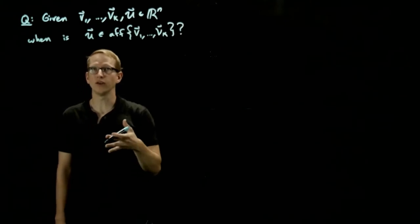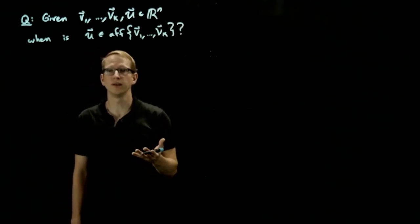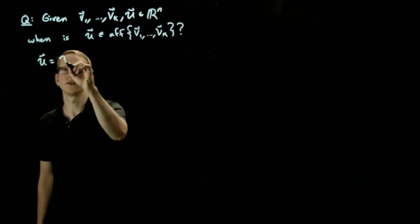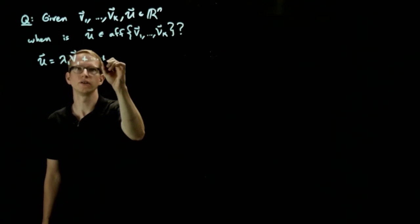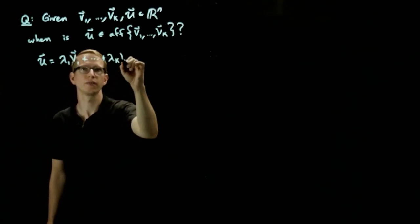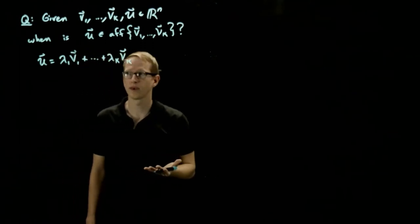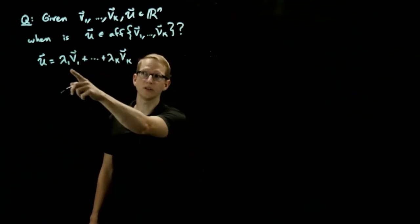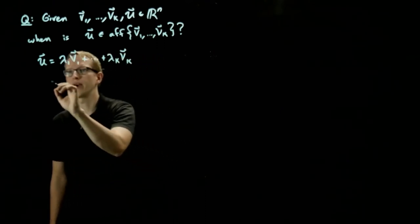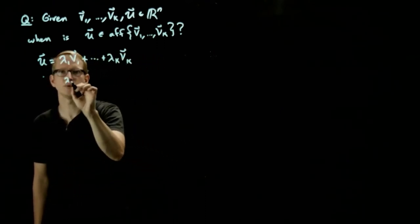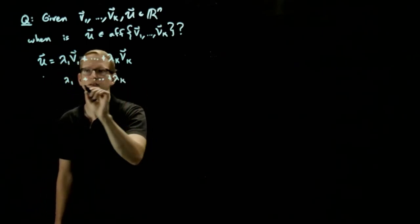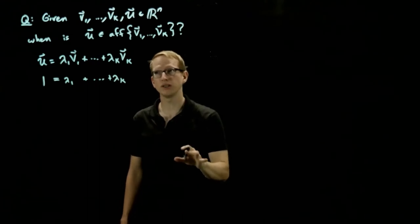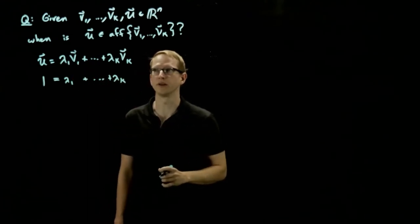Now, in order for us to solve this problem, then we have to be able to write u as a linear combination of v1 through vk. But because it's an affine combination, we have an additional constraint on what these coefficients could be. And that constraint is that lambda_1 plus lambda_k equals 1, which is also a linear system in the unknowns lambda_1 through lambda_k.